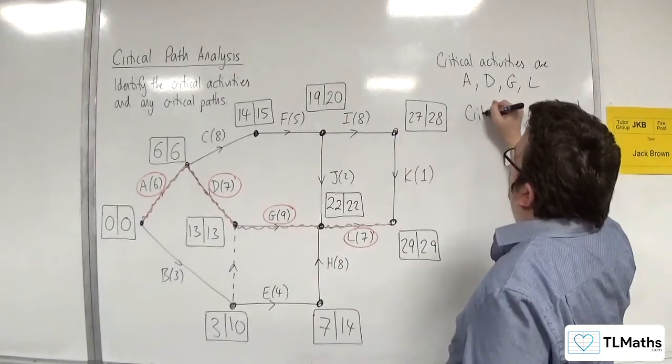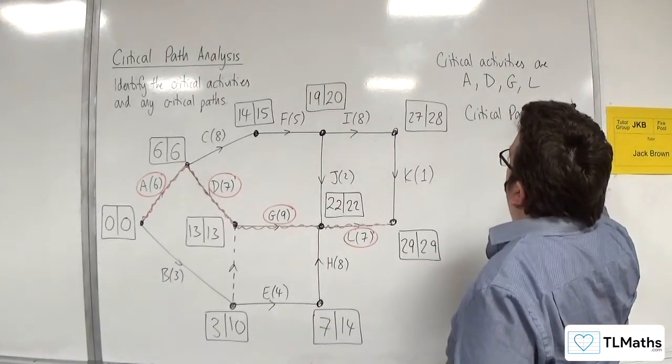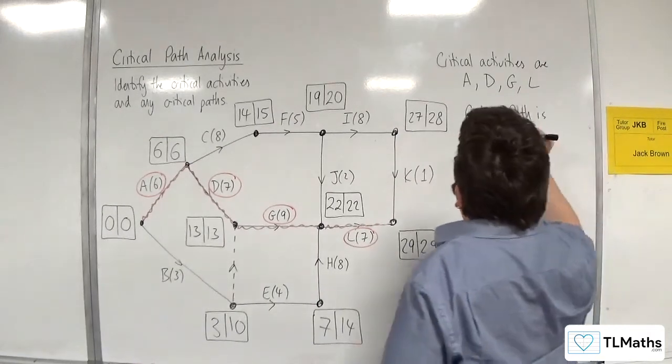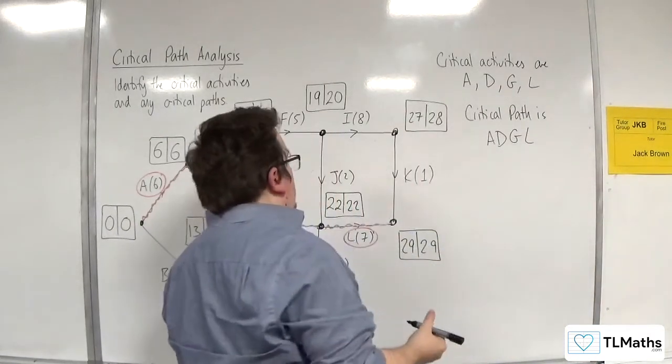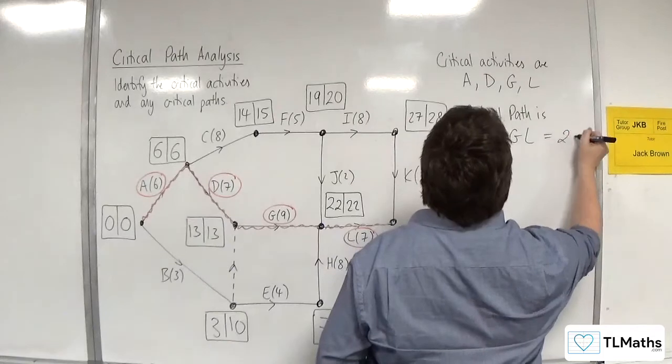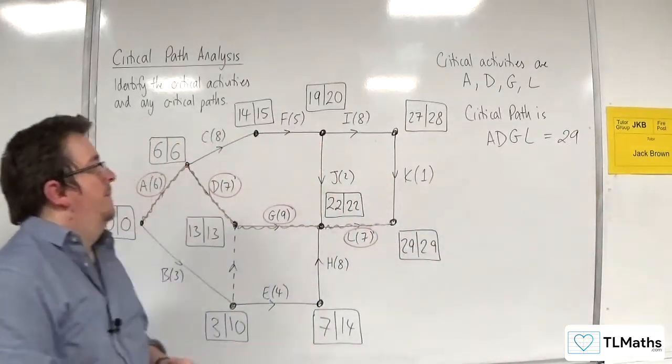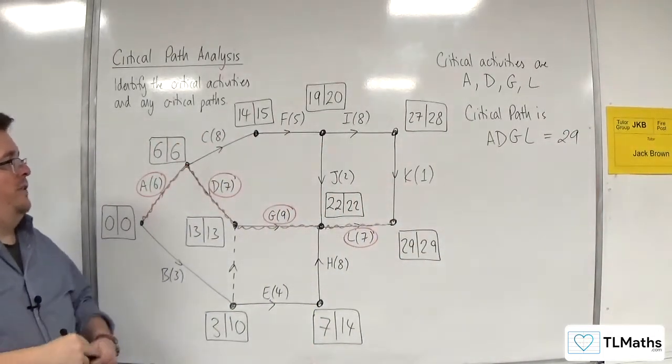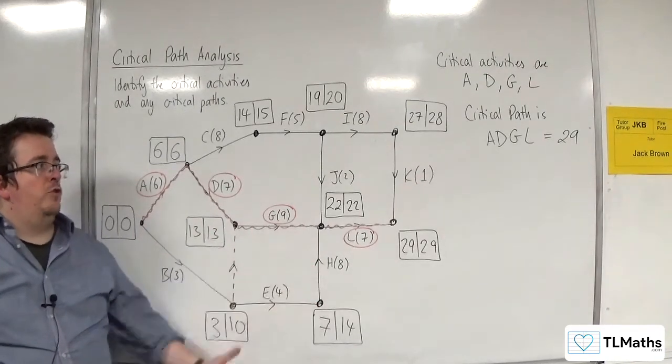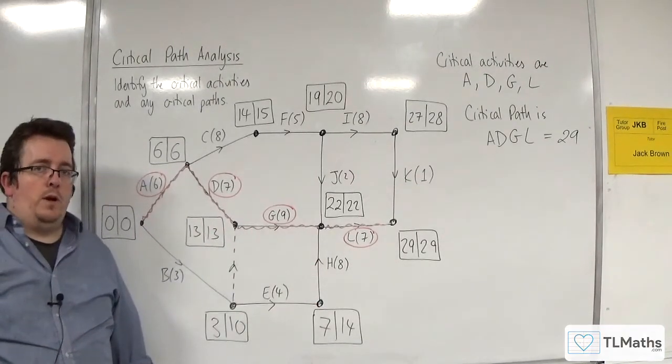Now, the critical path is A, D, G, L, and that is equivalent to 29. So that's how we can identify the critical activities and the critical path in an activity network. Good luck.